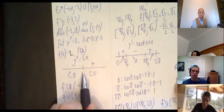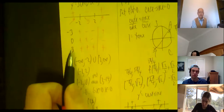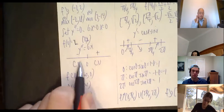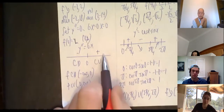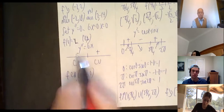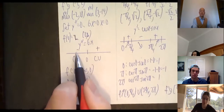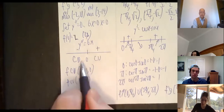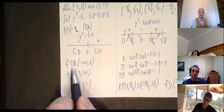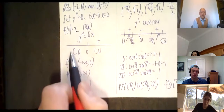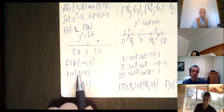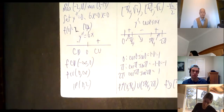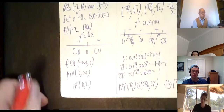Sign chart for f″: plug in a negative number like -1 — it gives negative. Plug in a positive number like 1 — it gives positive. So: negative then positive. Negative second derivative means concave down, positive means concave up, so there's an inflection point. f is concave down from (-∞, 0) and concave up from (0, ∞), with an inflection point at (0, 2).